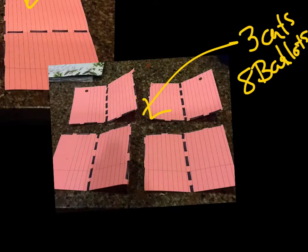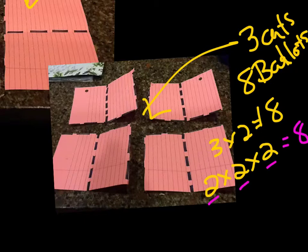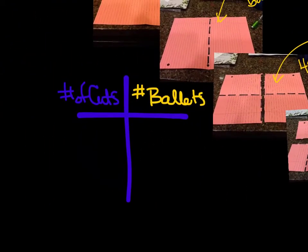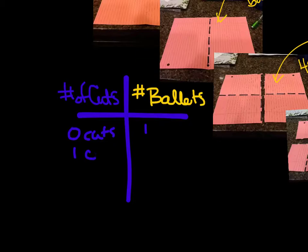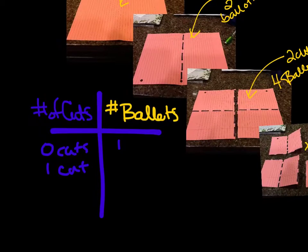Three times two doesn't get me eight, but two times two times two does. How many twos do we have? One, two, three twos — and I'm getting eight from that. So let's fill out this table. We have number of cuts versus number of ballots. If we have zero cuts, we had just one ballot. If we have one cut, how many ballots did we have? Looking at our model, it looks like we had two ballots.